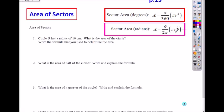So number one, circle O has a radius of 10, and what is the area of the circle? So you're asking for the whole area of a circle, so area equals pi r squared, which is pi times 10 squared, which is 100 pi centimeters squared.